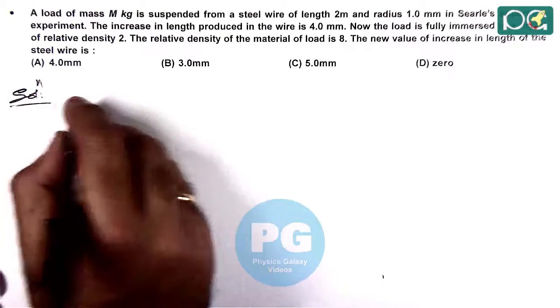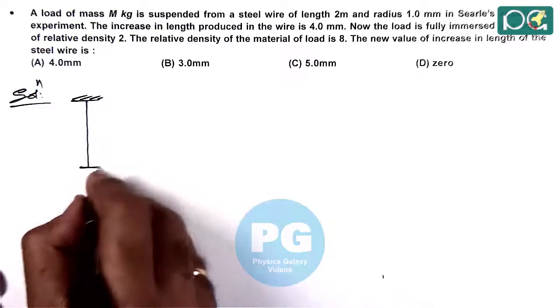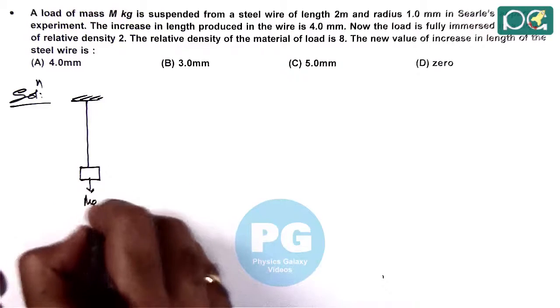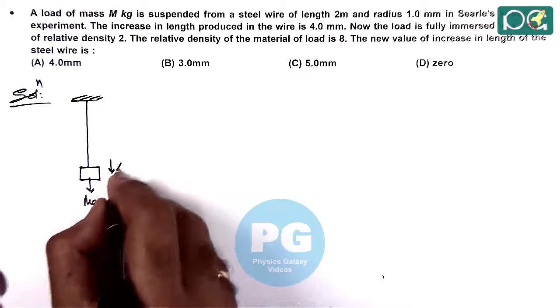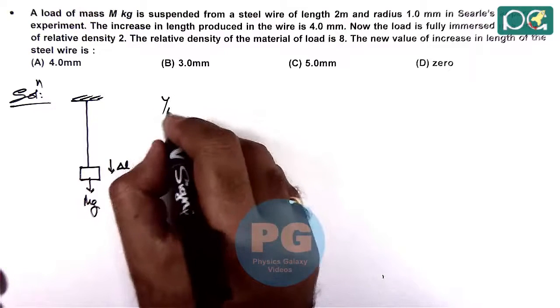So here we can analyze: if this is the steel wire and a load is suspended to it, then due to the weight mg it will have an extension in length delta L.